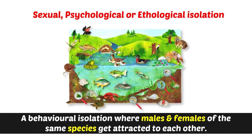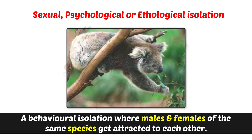Sexual, psychological, or ethological isolation is a behavioral isolation where males and females of the same species get attracted to each other.